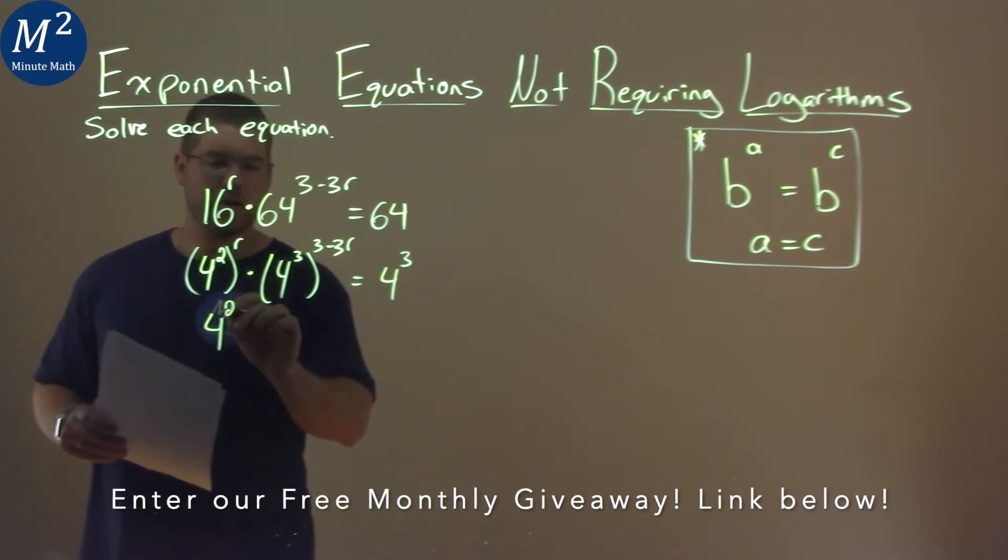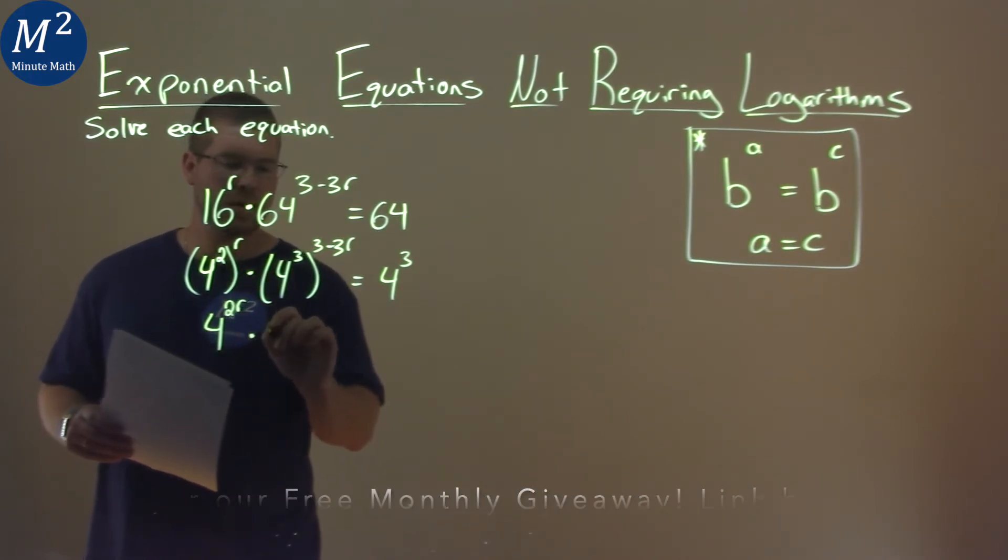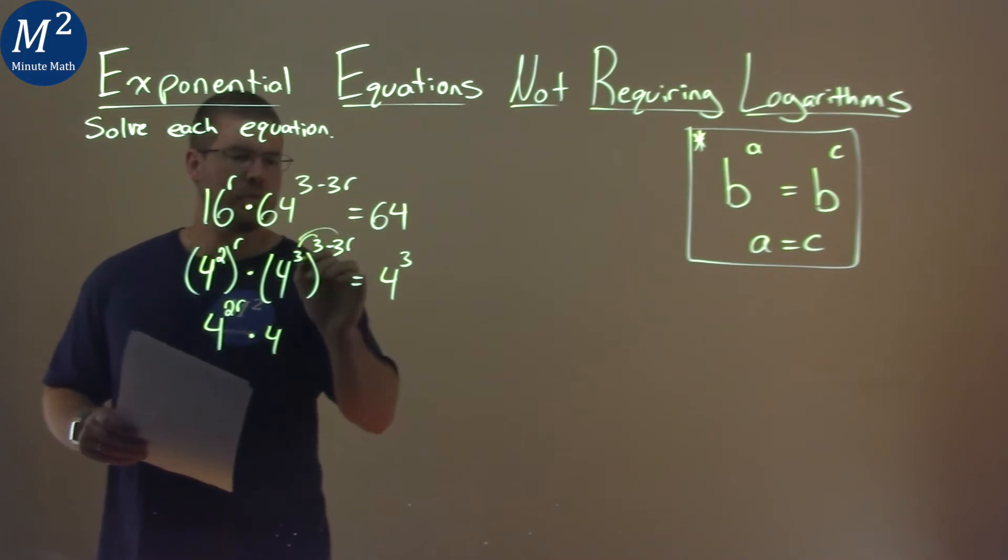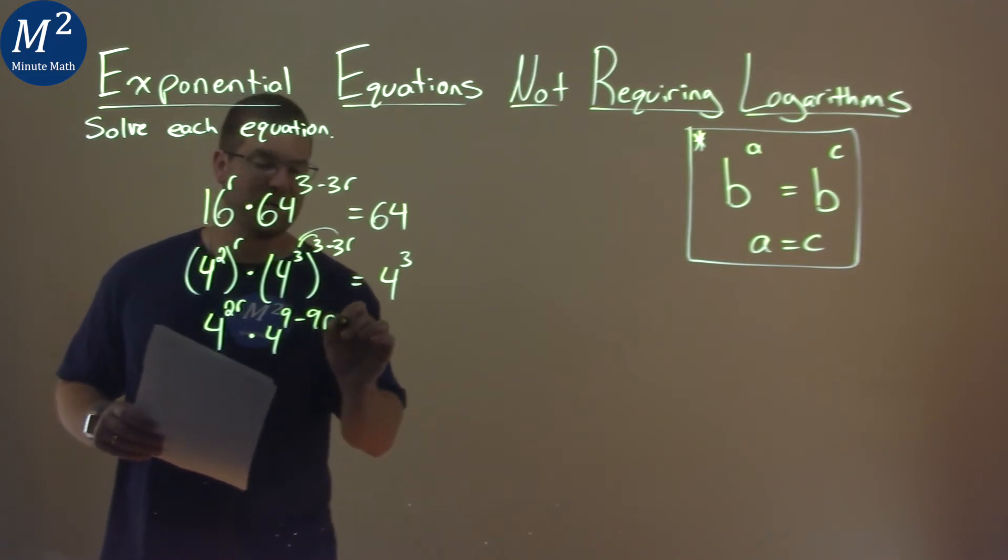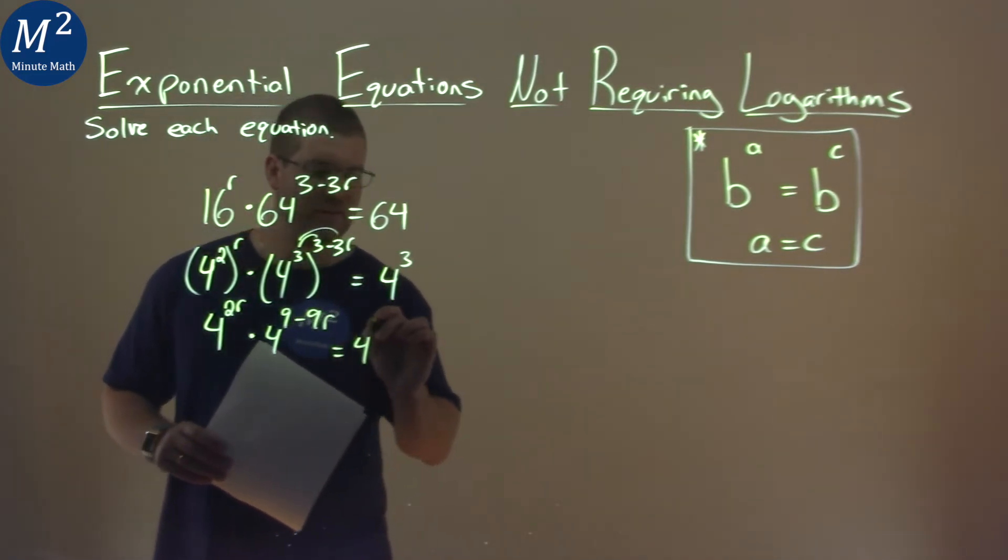So we have 4 to the 2r now, 2 times r, times 4, distribute here. 3 times 3 is 9, and 3 times minus 3r is minus 9r. And we have 4 to the 3rd power here.